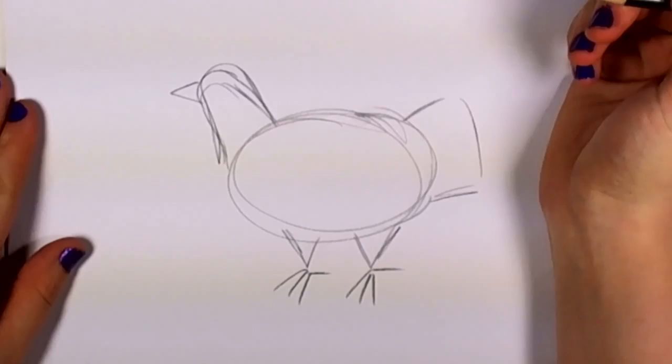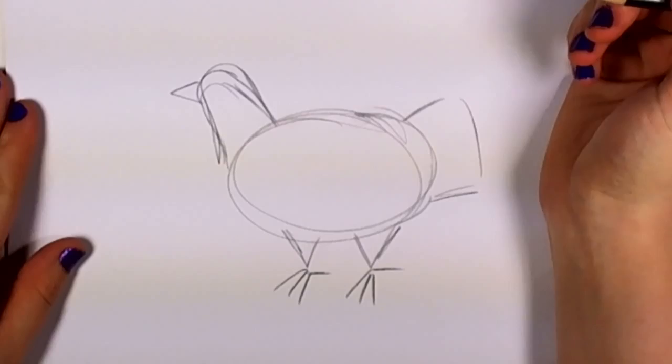Next, the beak, just a simple triangle, and the comb, which looks like a fluffy little cloud. Your chicken's face and her eye.